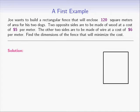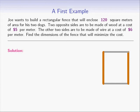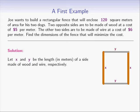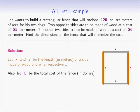Let's draw a rectangle and think of it as our fence. Two sides of the fence will be made of wood, so let's color them in brown. The other two sides will be made of wire, so let's color them in gray. We will need to introduce notation for the quantities involved — namely, the dimensions of the fence and the cost.